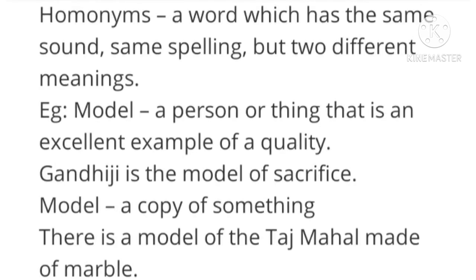Next: homonyms. Homonyms are words that have the same sound and same spelling but have two different meanings. For example, 'right' can mean a correct direction and also whatever is correct. 'Trip' means when you stumble and fall, and also a journey — same spelling T-R-I-P, same pronunciation, but different meanings. For example, 'model': a person or thing that is an excellent example of a quality — like Gandhiji is the model of sacrifice — or a copy of something, as in 'there is a model of the Taj Mahal made of marble.' These are called homonyms.